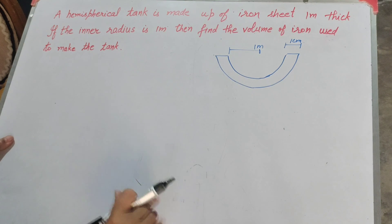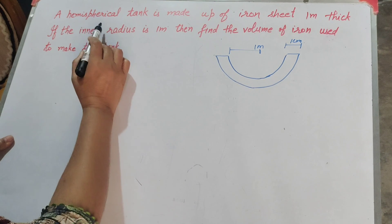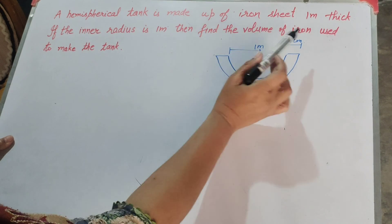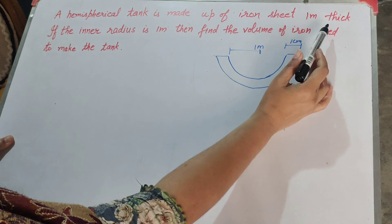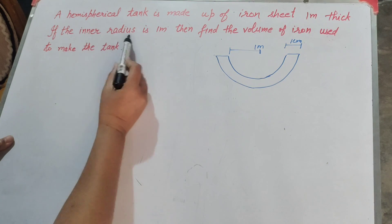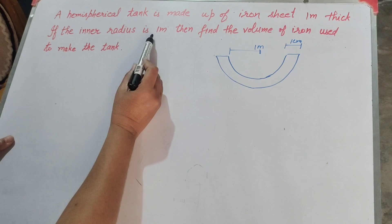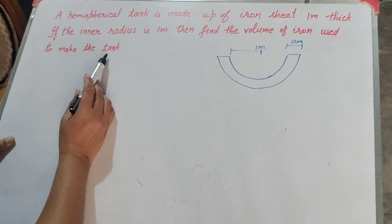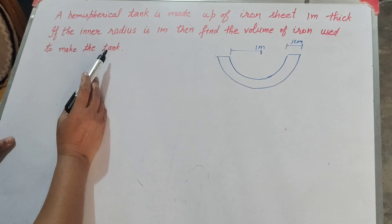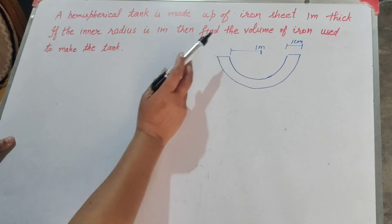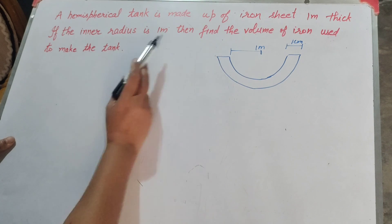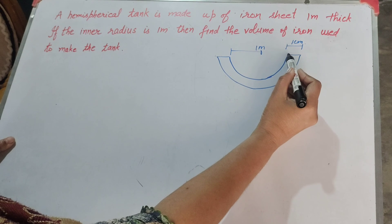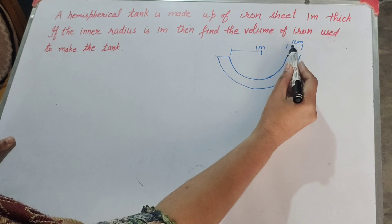Hello friends, welcome to my channel. In this video we discuss: a hemispherical tank is made up of iron sheet 1 meter thick. If the inner radius is 1 meter, then find the volume of iron used to make the tank. In this question we find the volume of iron used to make the tank.